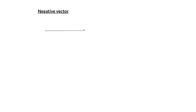The next term is the negative vector. Consider an example: if you are having a vector of magnitude 10 Newton acting towards right, and if you multiply it by the scalar quantity 2, the result is a vector of magnitude 20 Newton in the same direction.